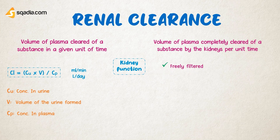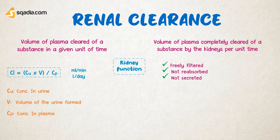Any substance that is freely filtered — meaning filtered freely as water — and that is not reabsorbed and not secreted by the renal tubules, the rate at which that substance is excreted in the urine will be equal to the rate of filtration of that substance by the kidneys. So any substance that follows all these rules will have a renal clearance equal to the GFR, which means that by measuring the clearance, we are actually measuring the GFR.